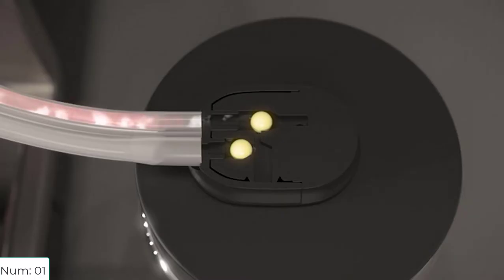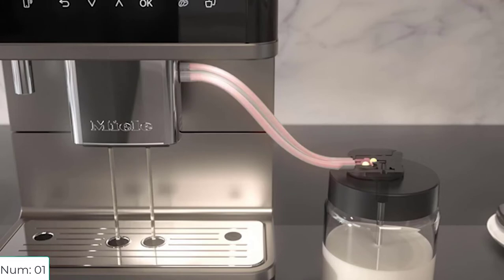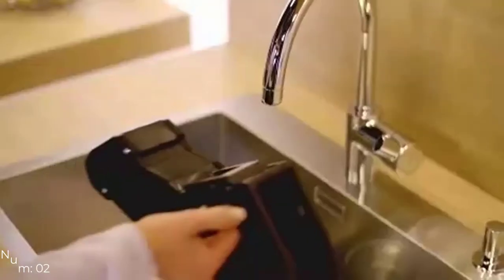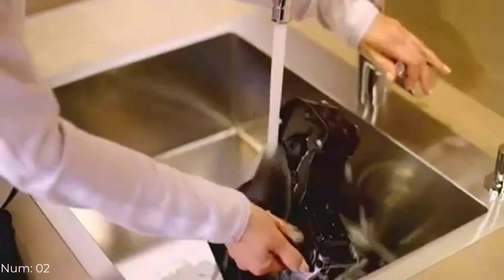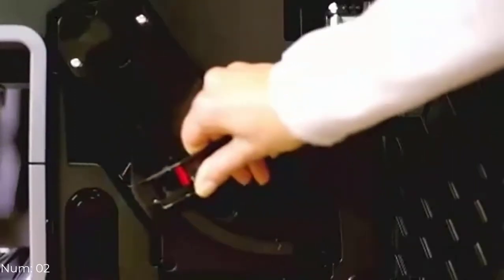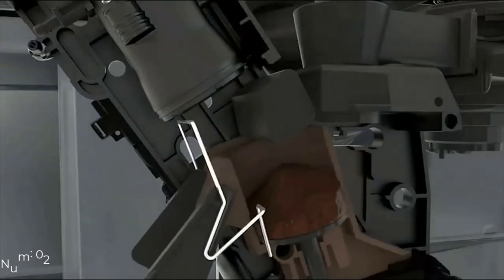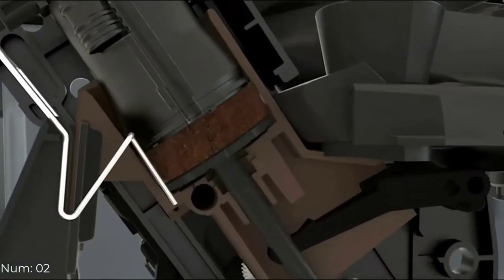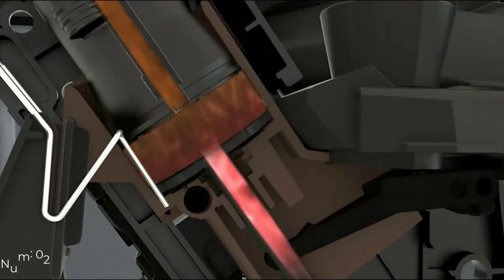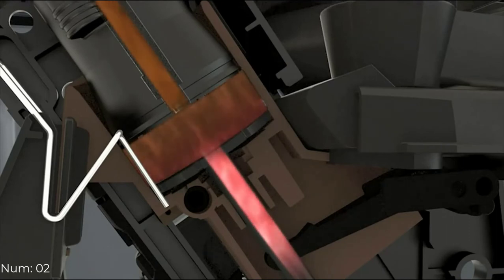Number two: Miele CM 5310 Silence coffee maker and espresso machine combo in tayberry red. Features grinder, milk frother, 1.3 liter capacity, silence feature, comfort clean, coffee pot function, one touch for two preparation, and individual language selection.